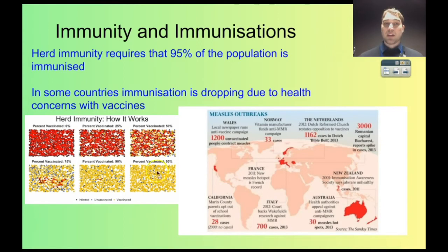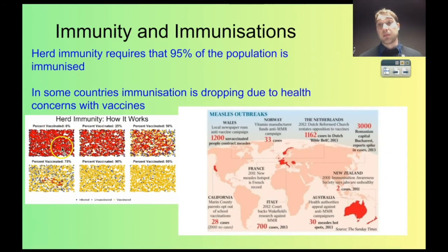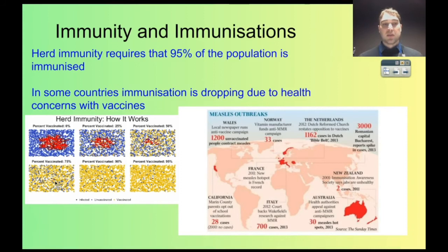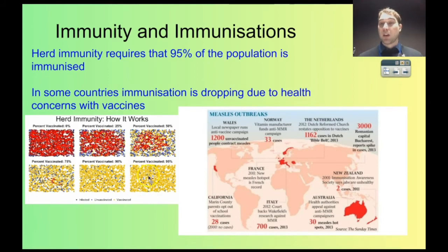We can see the effect of herd immunity in this animation: where nobody is vaccinated, when one person gets the infection they pass it on and it spreads through the community. As you increase the proportion vaccinated, you reduce the ability of the pathogen to transmit and cause sickness. Once you get to 95%, it just does not spread very far at all, so vaccination is very, very important.